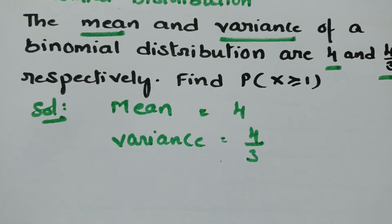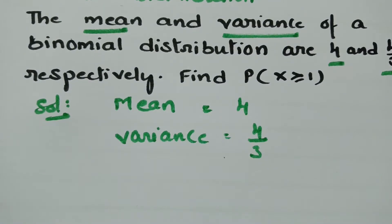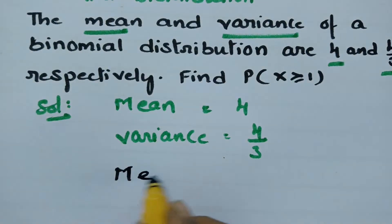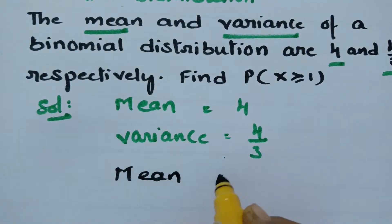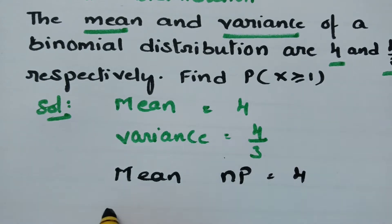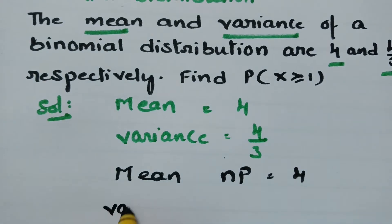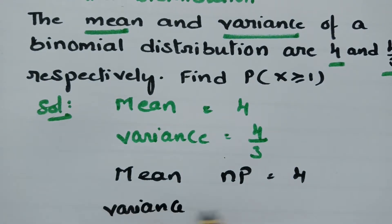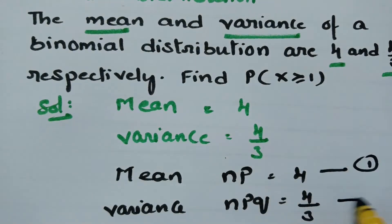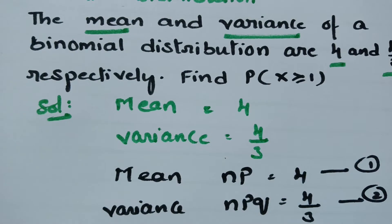As you know from the definition, the mean is nothing but n times p. So mean μ = np = 4. And the variance formula is npq, so npq = 4/3. This is equation 1 and this is equation 2.